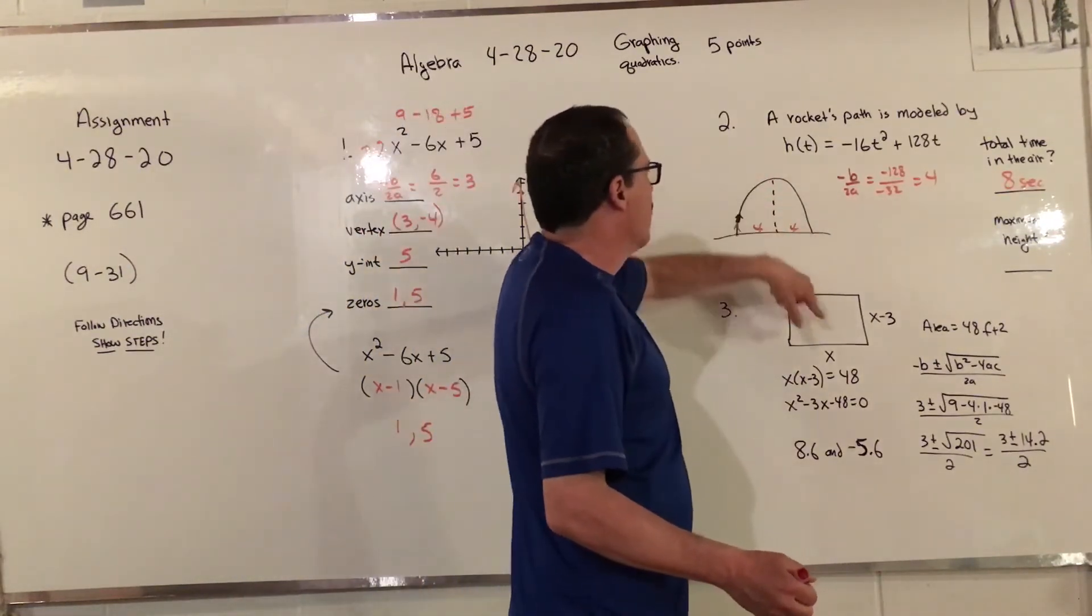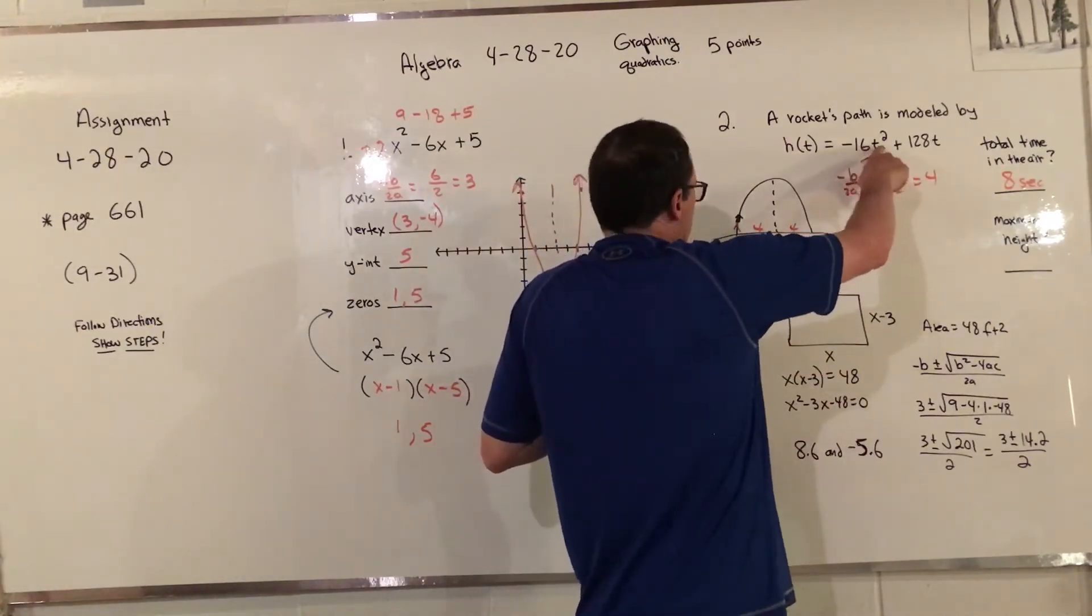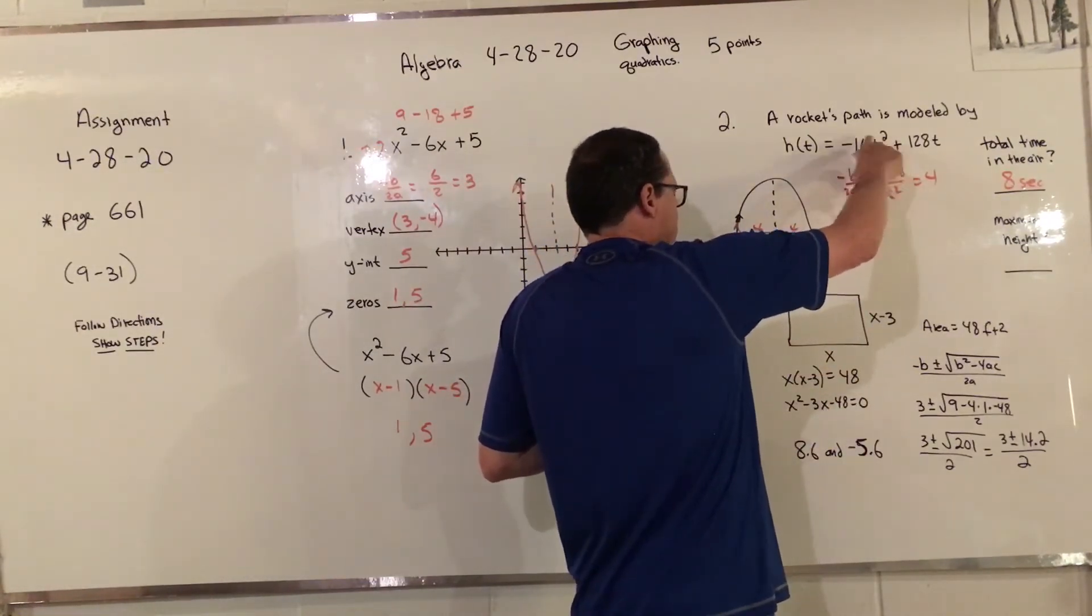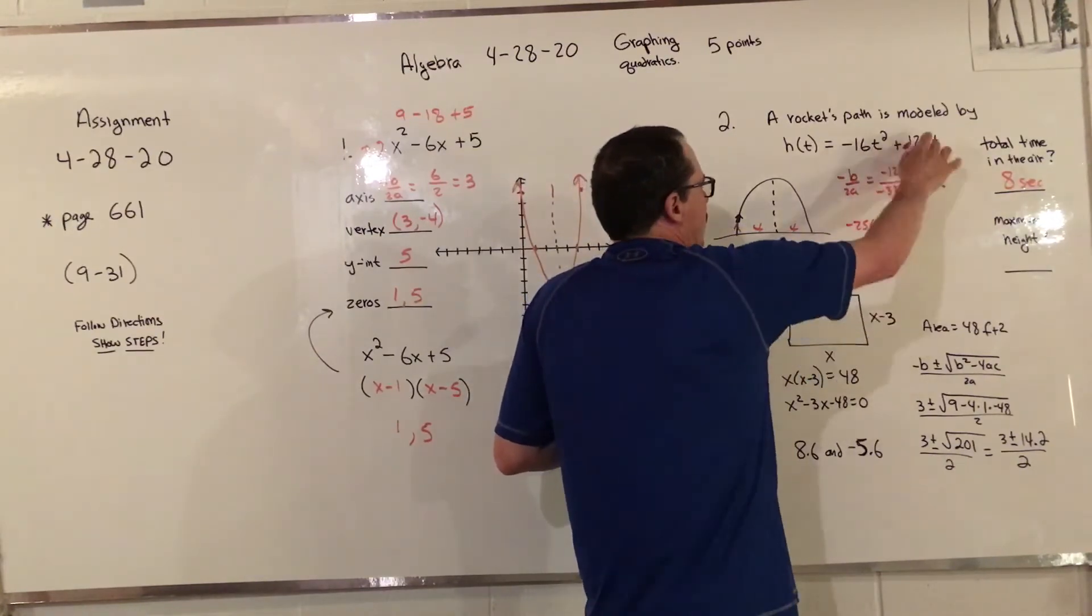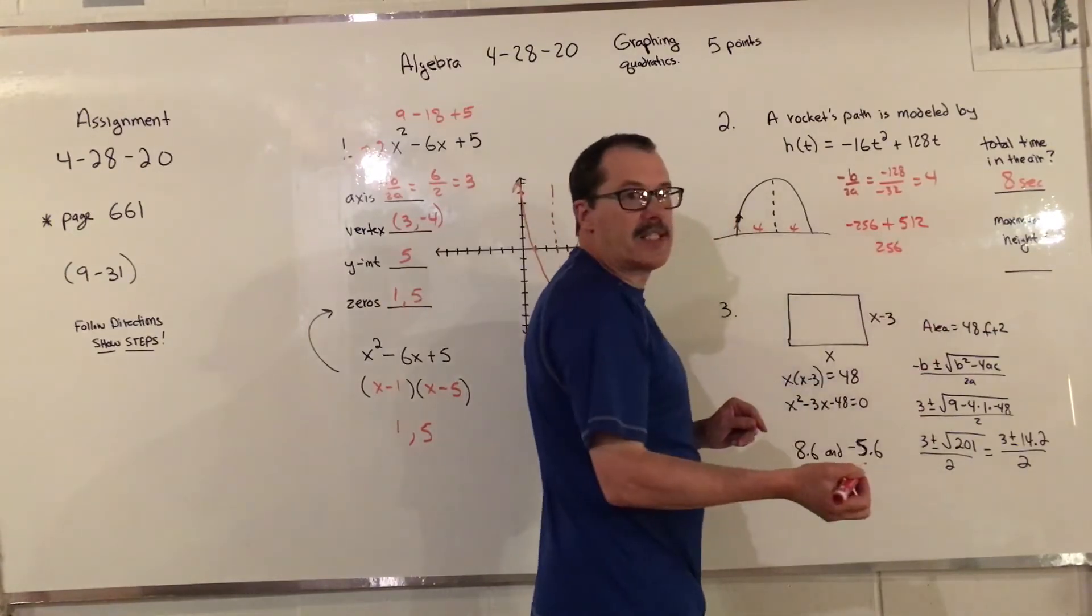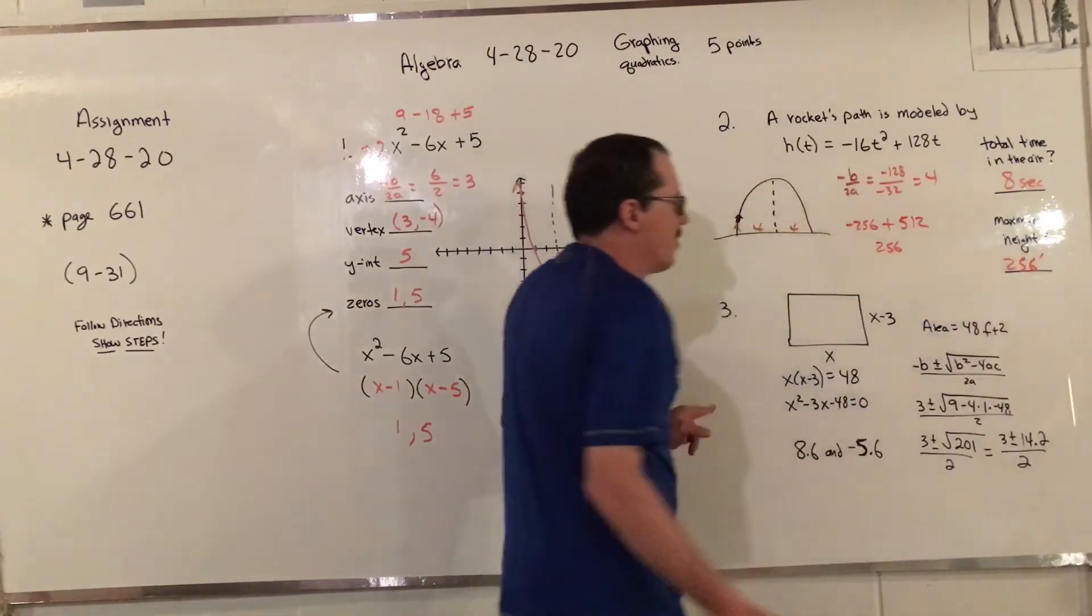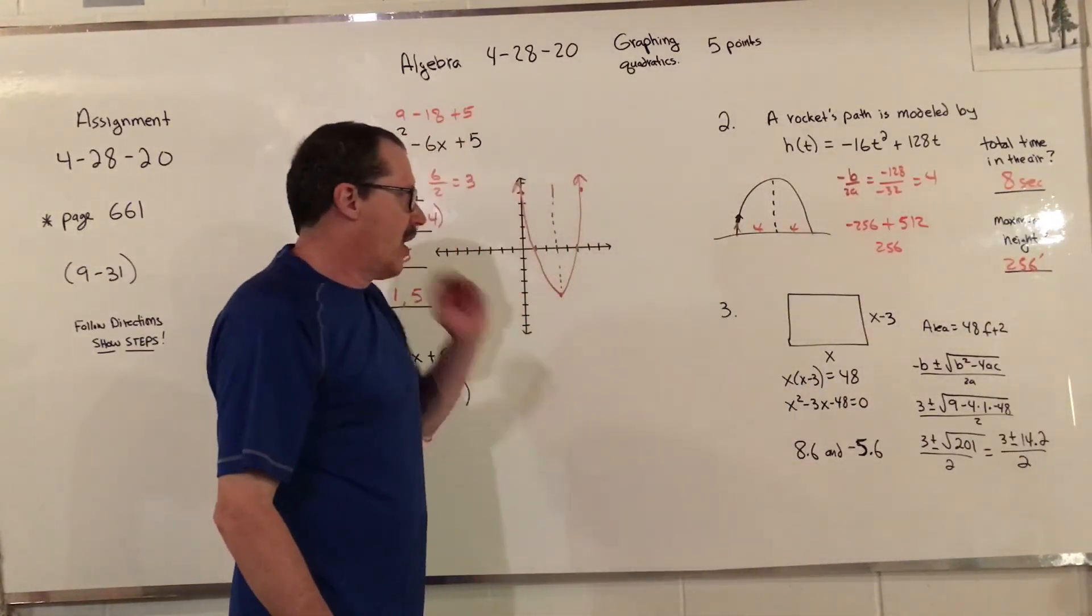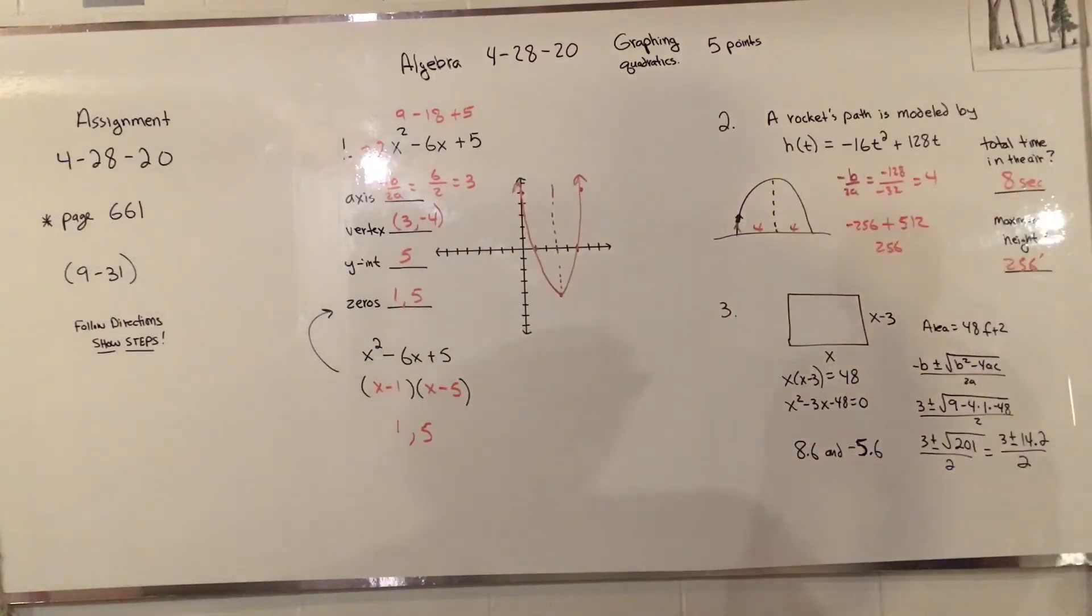Just like we did here, this is called a minimum because it's down, and this is going to be called a maximum because it opens up like that. When we plug 4 in here, 4 squared is 16 times negative 16 is negative 256, 128 times 4 is 512. If we add those together we get 256 feet.